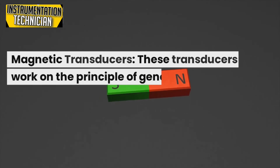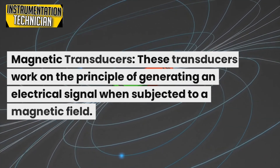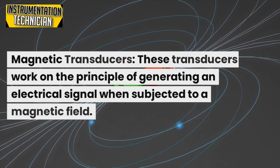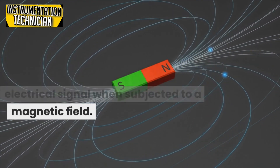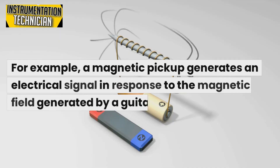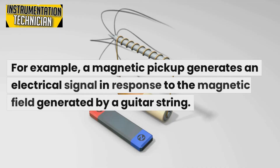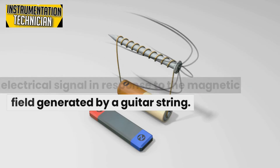Magnetic transducers work on the principle of generating an electrical signal when subjected to a magnetic field. For example, a magnetic pickup generates an electrical signal in response to the magnetic field generated by a guitar string.